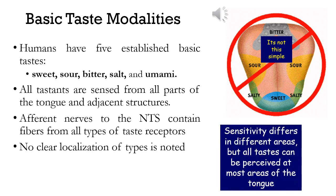The taste modalities identified are sweet, sour, bitter, salt, and the latest one being umami. Tastants are sensed from all parts of the tongue and adjacent structures — unlike what was earlier taught, that specific tastes are only detected at specific points. Sensitivity may differ in different areas, but all tastes can be perceived at most areas of the tongue. The afferent nerves carry action potentials to the nucleus of tractus solitarius and contain fibers from almost all types of taste receptors, so there is no clear localization of taste types.